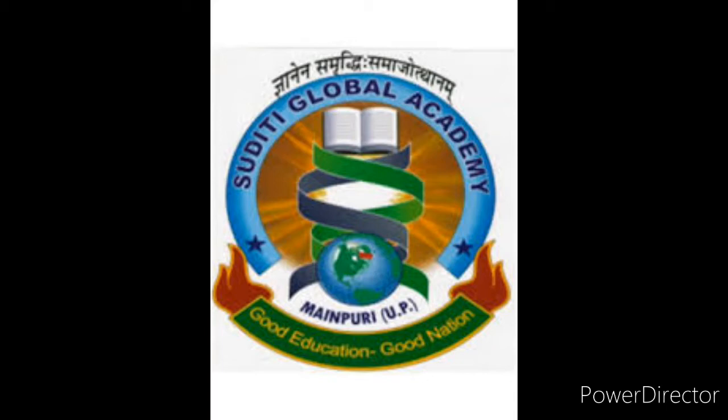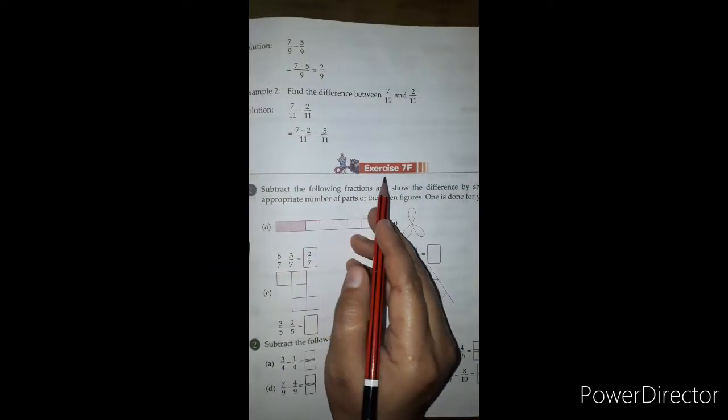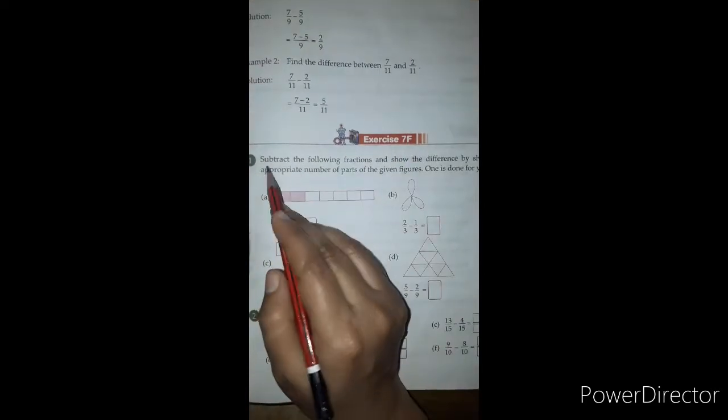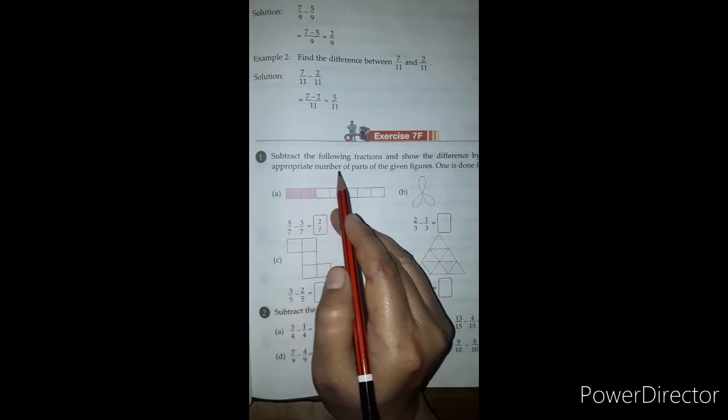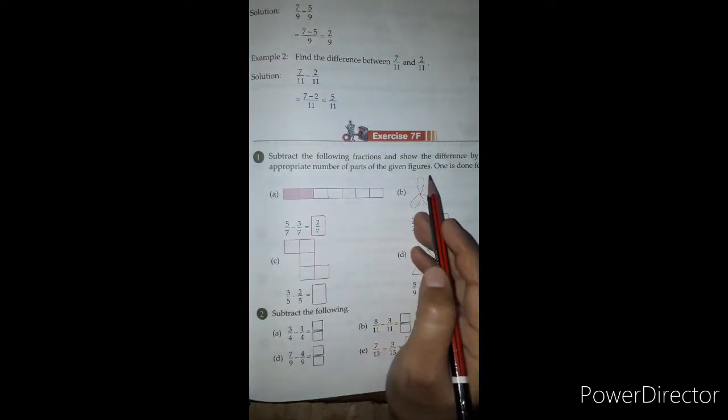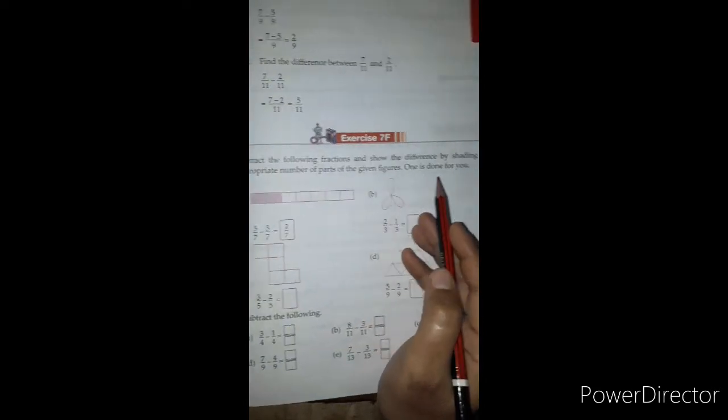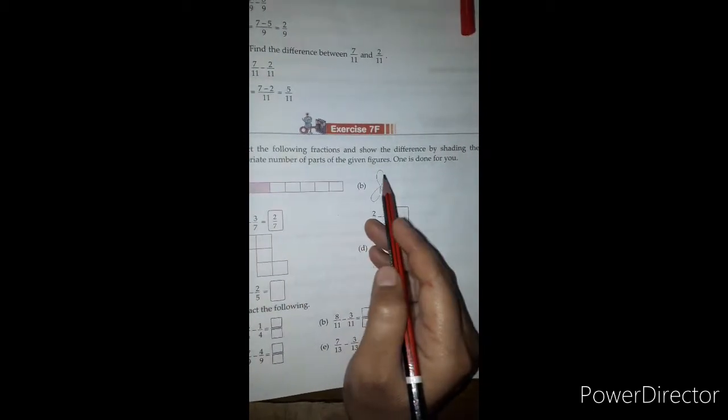Hello, today I am going to solve Exercise 7F. Let's start. Question number 1: Subtract the following fractions and show the difference by shading the appropriate number of parts of the given figures.